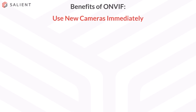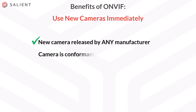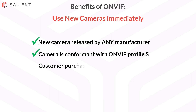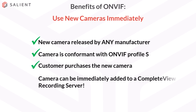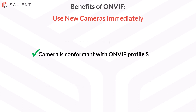Another benefit with ONVIF is that you can use newly released cameras immediately. While it's impossible for us to test each camera model released yearly by every manufacturer, we do test every camera provided to us to validate support of ONVIF features. When any manufacturer releases new cameras and the model is Profile S conformant, your customer buys it, and you can use that camera with CompleteView. The variable is whether or not the camera is conformant with ONVIF Profile S.